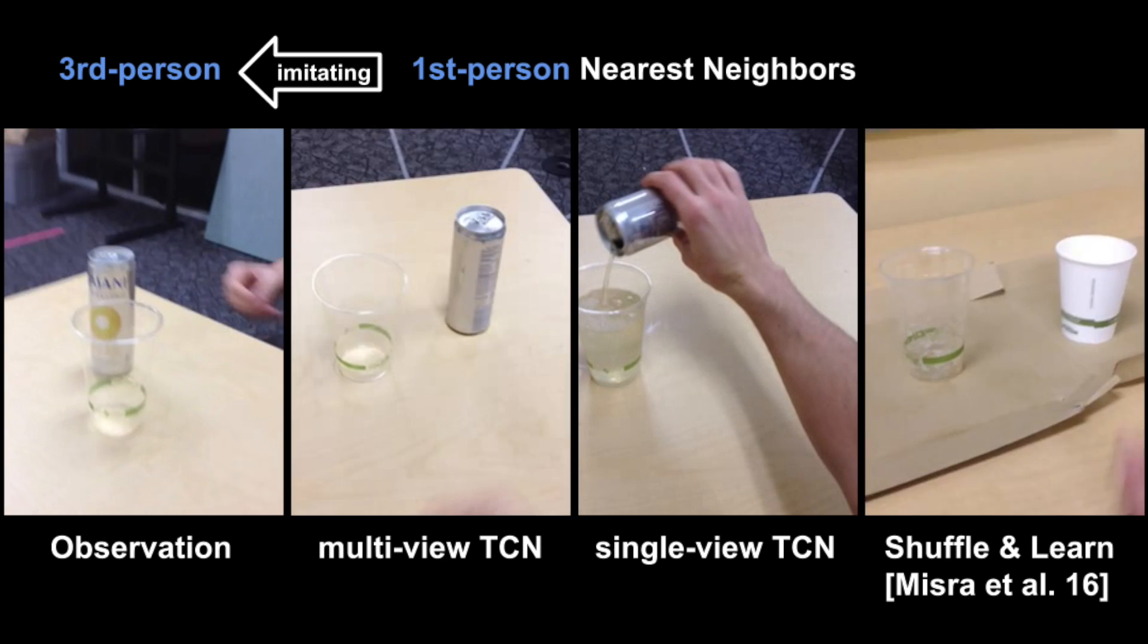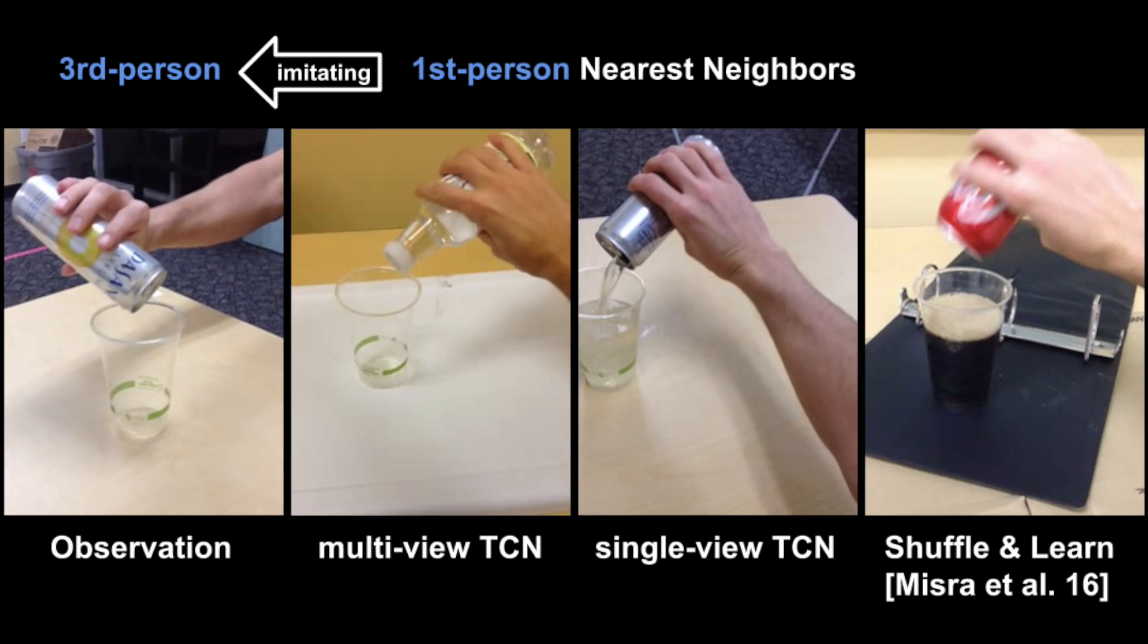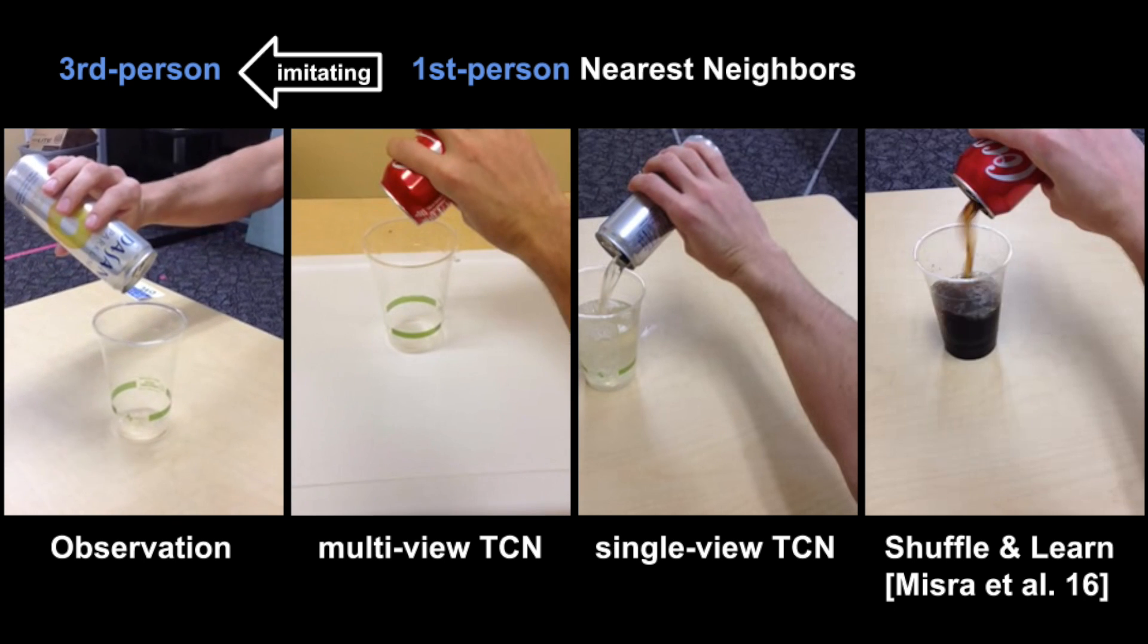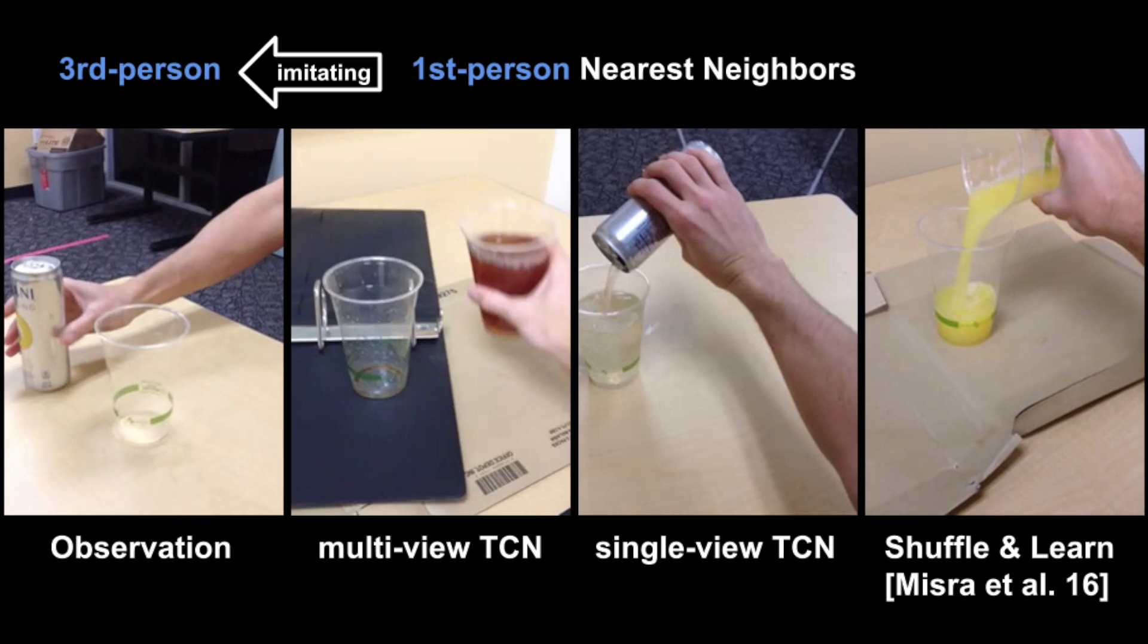Here we show a demonstration where no liquid is flowing. In this video, the TCN can choose neighbor frames from any test video, including ones where liquid is being poured. As you can see, the model is able to recognize the angle of the pouring container, as well as whether or not liquid is flowing.